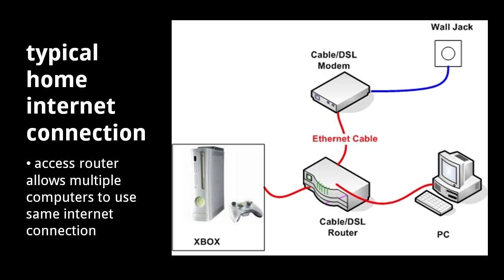A modem, short for modulator demodulator, converts digital data into analog signals and vice versa. In a typical home setup, a cable or DSL modem is the device directly connected to your service provider's network, and your provider's network assigns the modem an IP address. You can directly connect your computer to the modem, but it's generally preferable to connect the modem to what we confusingly call an access router, or even more confusingly, commonly just call a router. An access router provides three functions.